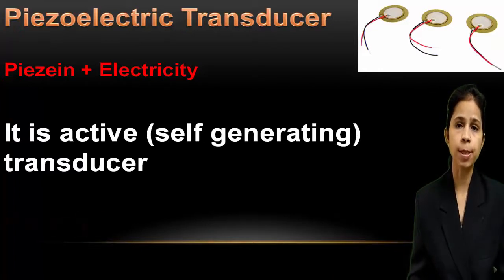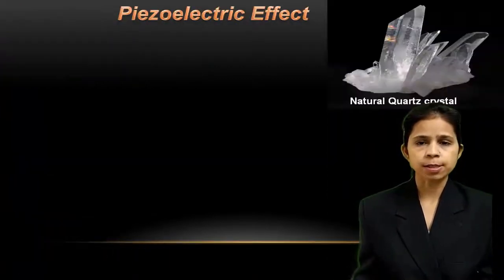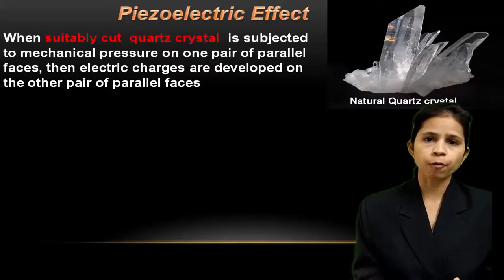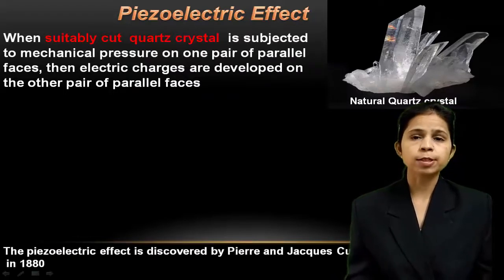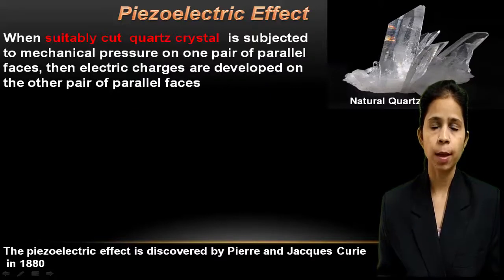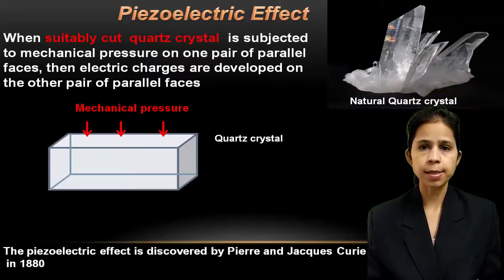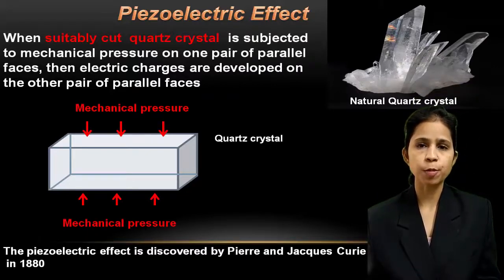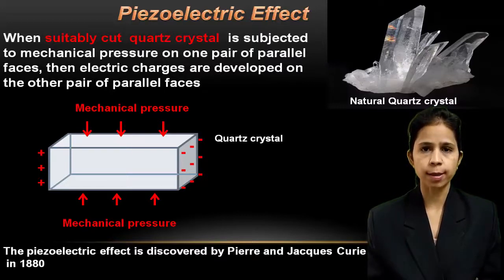Piezoelectric transducer works on the piezoelectric effect. When a suitably cut quartz crystal is subjected to mechanical pressure on one pair of faces, then an equal and opposite charge is developed on the other pair of faces — this is known as piezoelectric effect. The piezoelectric effect was first discovered by two brothers, Pierre and Jacques Curie, in the 1880s. Natural piezoelectric crystals have to be cut in a suitable manner. When a mechanical stress is applied along opposite faces of a suitably cut quartz crystal, a potential difference is developed along the other two opposite faces. Crystals which exhibit piezoelectric effect are called piezoelectric crystals.